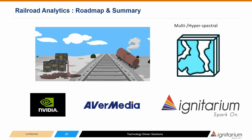Advanced analytics using multi-spectral or even hyperspectral camera payloads are in the works for detection of complex anomalies like chemical spills on track or gas leakages from freight containers. In summary, using the right choice of compute engines from the NVIDIA Jetson stable — be it the Nano, Xavier NX, or Xavier AGX — the right integrated box PC solution from AvaMedia, and purpose-built image processing and neural network algorithms from Ignitarium, it is possible to deploy practical solutions for complex infrastructure analytics use cases from high-throughput aerial platforms.